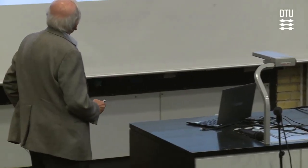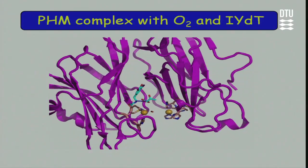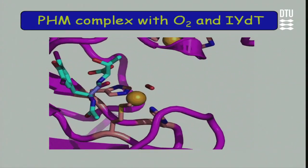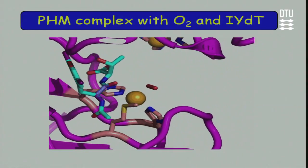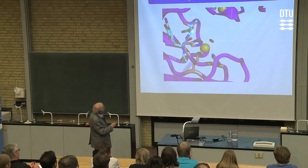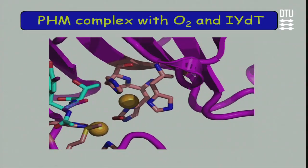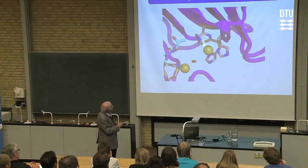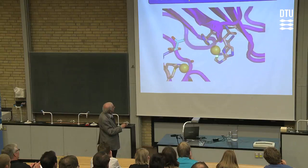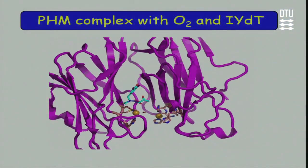Here is how it looks in general: this is the catalytic side, that is the peptide. Here is where the hydrogen that is going to be abstracted lies, here is where the other copper lies with the three histidines, and this is the distance that has to be covered by the electron transfer.